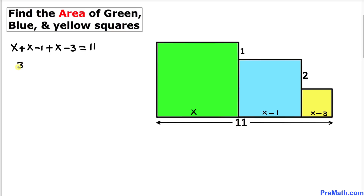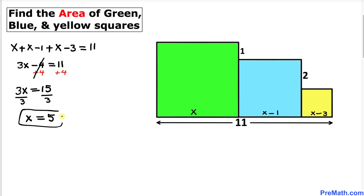Adding the like terms, we get 3x minus 4 equals 11. Adding 4 on both sides, 3x equals 15. Dividing both sides by 3, x equals 5 units. So the side of the green box is 5 units, and the side of the blue box is 5 minus 1, which is 4 units.